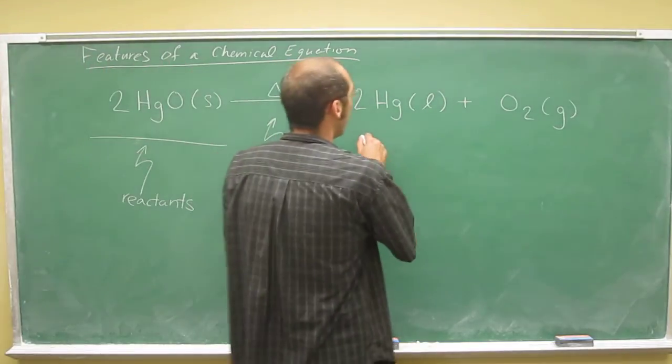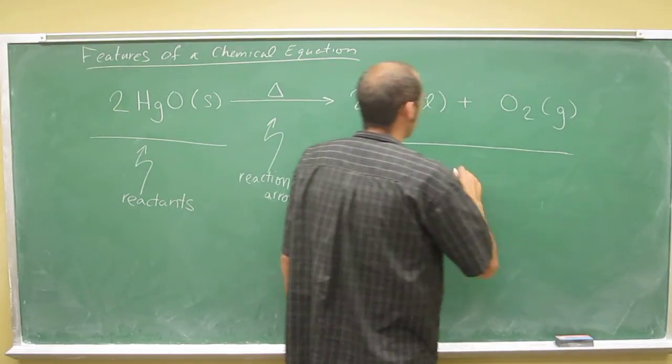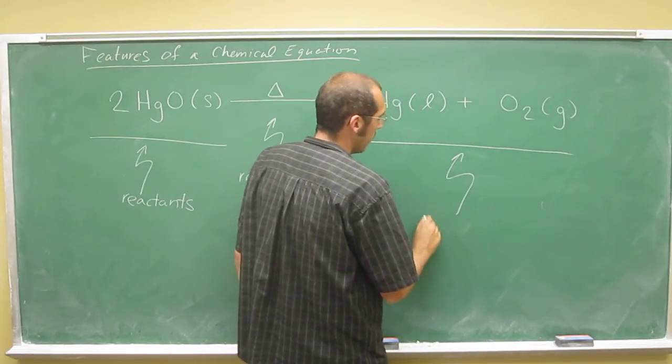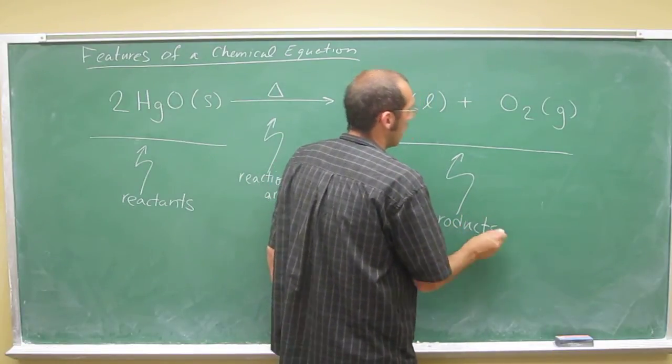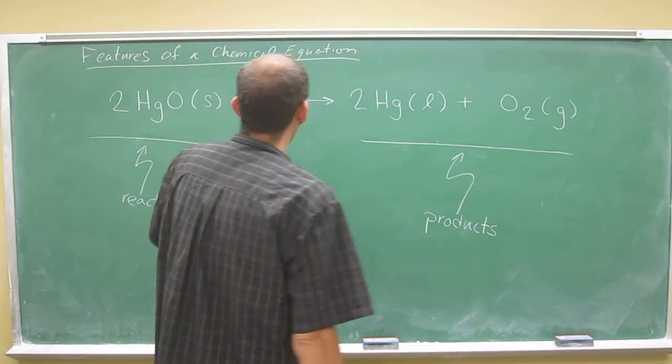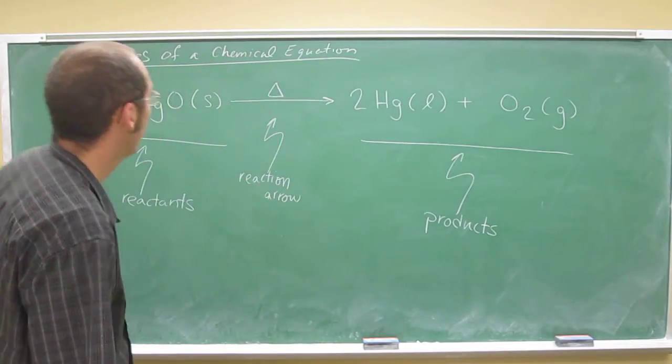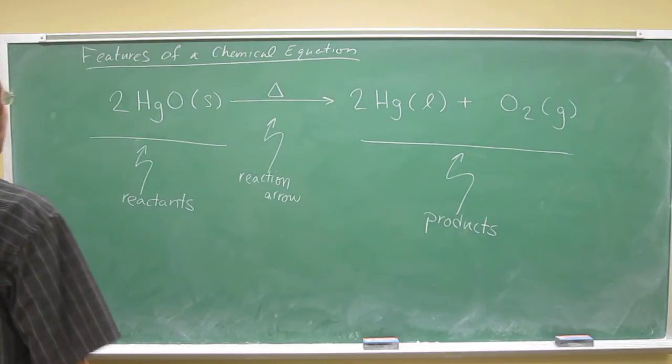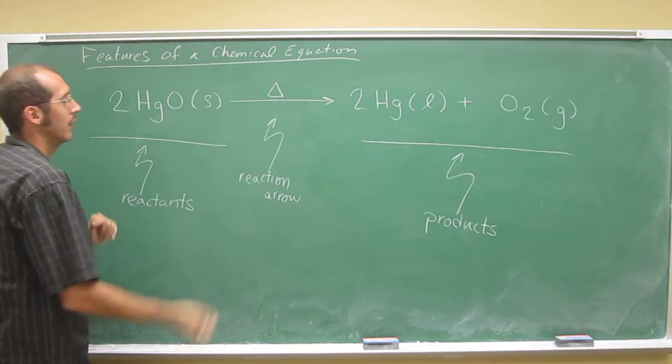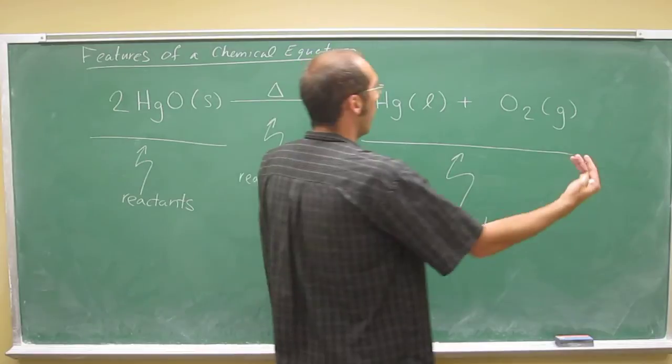On the right of the reaction arrow, we've got the products. So this is what happened after whatever happened in the reaction arrow took place. In this case, we've got one reactant and two products.